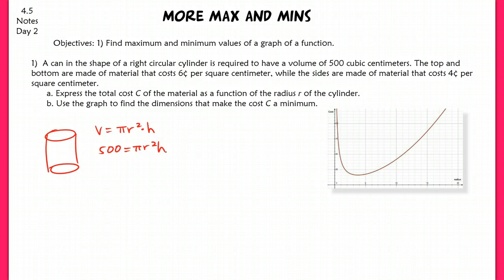The top and bottom are made of material that costs 6 cents per square centimeter, while the sides are made of material that costs 4 cents per square centimeter. We're going to express the total cost of the material as a function of the radius of the cylinder. To talk about the material this shape is made out of, we want to discuss the surface area. The surface area will dictate how much material you actually end up using, and therefore the cost, since it's per square centimeter.